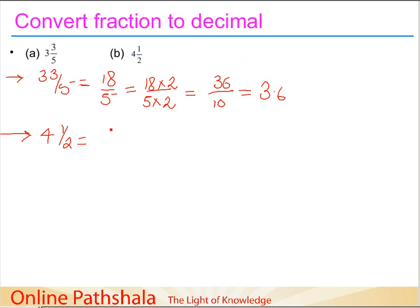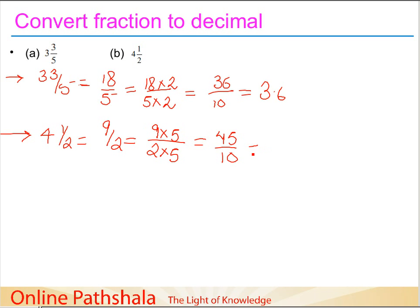The next mixed fraction is 4 and 1/2. Four twos are eight, plus one gives nine, so the improper fraction is nine-halves. If you have confusion converting mixed fractions to improper fractions, refer to chapter seven of standard six. To get denominator ten, I multiply two by five, and the numerator nine by five as well, giving forty-five-tenths. This equals 4.5 — moving only to the tenths place.